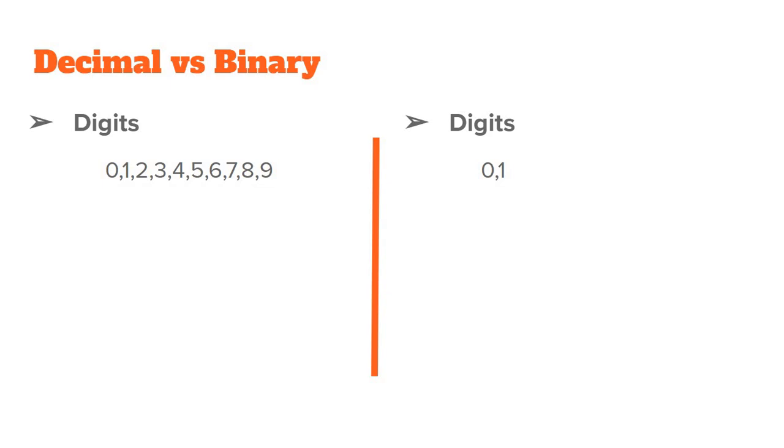It has 10 digits from 0 to 9, while the binary numbering system only has two digits, 0 and 1. So, in decimal we also have obviously 0 and 1, but we also have the additional digits 2, 3, 4, 5, 6, 7, 8, and 9. While in binary we only have 0 and 1.